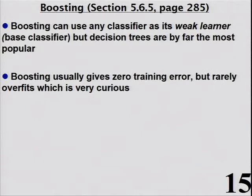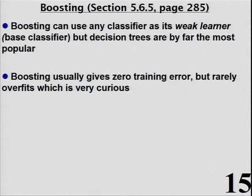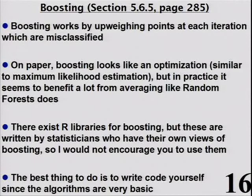The idea behind boosting is you take a weak classifier — like a very small decision tree — and boost it up. It combines many trees not just by averaging, but aggressively: wherever the small tree makes mistakes it gives those points higher weight, puts another tree on top, and combines them so it can get every point correctly. The way it does this upweighting, it's optimizing something that looks like maximum likelihood — specifically the exponential loss, which looks like the binomial log likelihood.